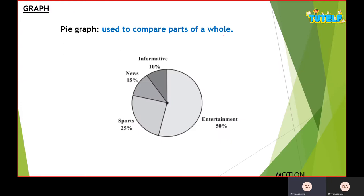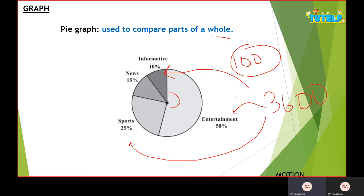The next graph is the pie graph. The pie graph is used to compare the parts of a whole. The whole represents 100%, a full circle. We divide this into parts using the angle system. Our entertainment is 50%, sports is 25%, news is 15%, and information is 10%. So from 360 degrees, 50% gives us 180 degrees for entertainment, 90 degrees for sports.